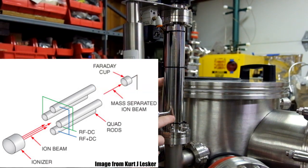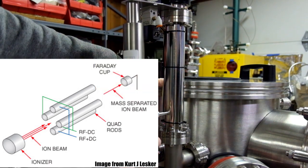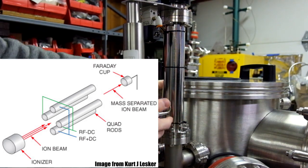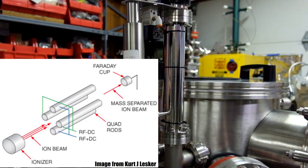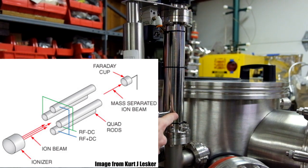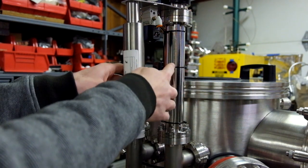Inside there are three main sections: the ion source, the quadrupole, and the detector. The ion source is pretty simple — it normally consists of a filament which generates electrons and smashes those into the residual gas, ionizing it by electron bombardment. Down here you have your ions generated, and they'll be accelerated with a negative potential toward the quadrupole.